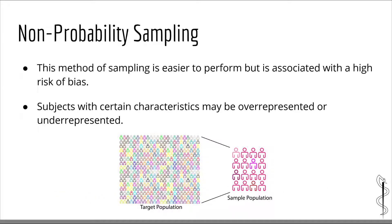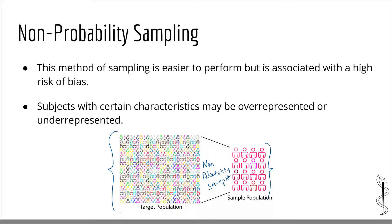Why is non-probability sampling bad for making generalizations about populations? When you obtain a non-probability sample, individuals with certain important characteristics may be over-represented or under-represented. For example, if you want to make generalizations about a population with individuals of many colors, but your sample only includes individuals with different shades of red, any conclusions will only apply to the red population — not the full target population including yellow, blue, green, or gray individuals. This type of error is called selection bias.